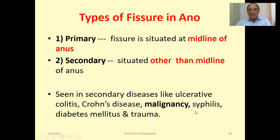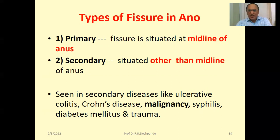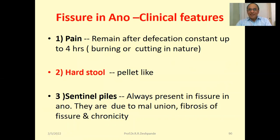Predisposing factors also include syphilis, diabetes mellitus, and trauma. You must check the blood sugar of the patient in any anorectal problem — fissure, piles, or fistula. Don't forget to check it. Also do liver function tests. Many patients are taking non-vegetarian food, which is also bad for anorectal problems.